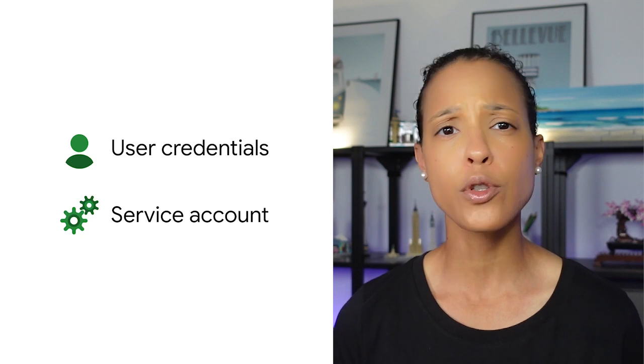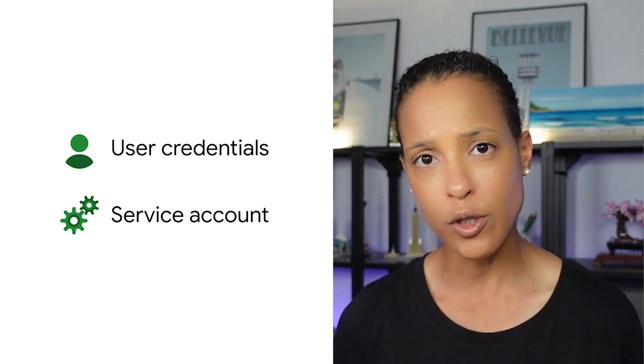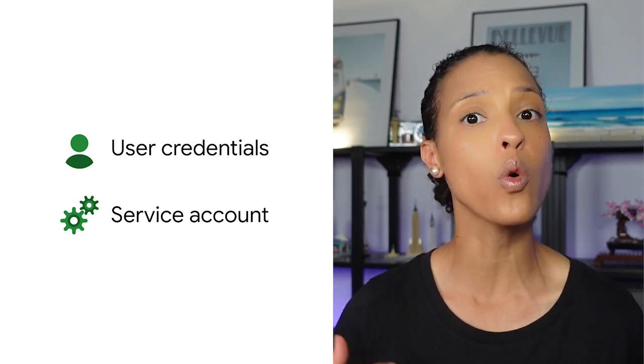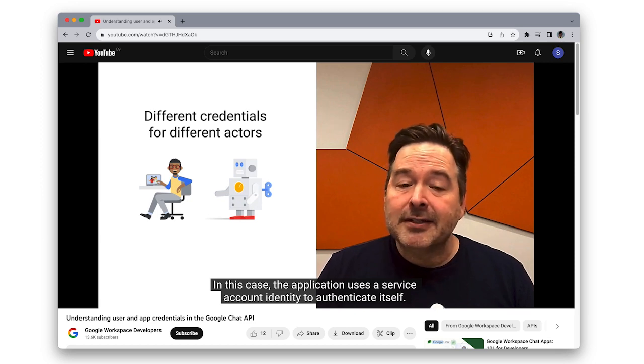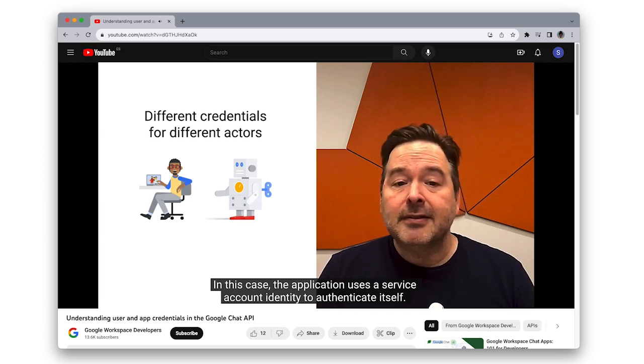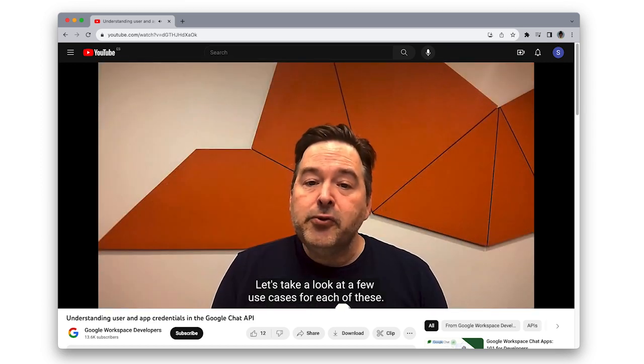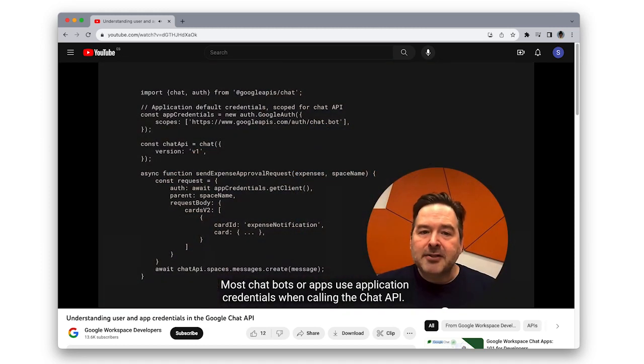Authentication and authorization are prerequisites for using the Google Chat REST API. You can choose to either authenticate with user credentials or with a service account. Check out the video 'Understanding User and App Credentials in the Google Chat API', linked in the description below, to learn more about authentication. In this video, we will be using user credentials to authenticate.